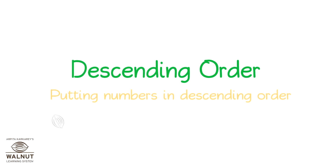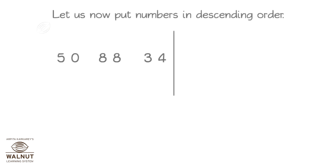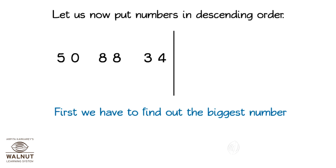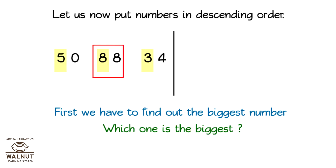Let us now put numbers in descending order. First, we have to find out the biggest number. Which one is the biggest? 88. So, that number goes first.